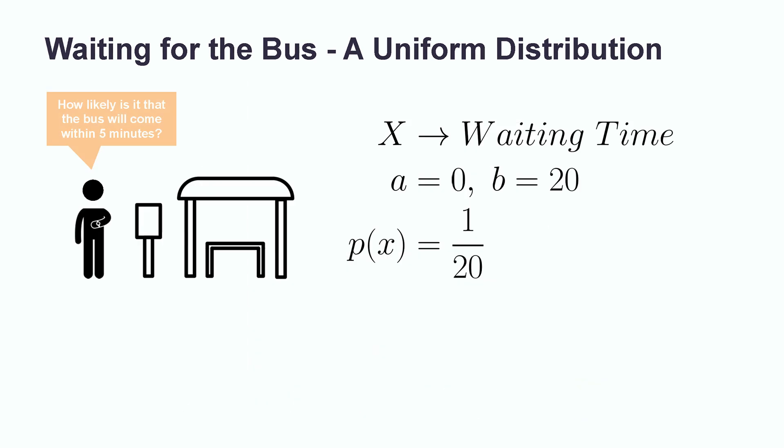Now, we can ask ourselves something like, how likely is it that the bus will come within 5 minutes of our arriving? Pause the video for a moment to think about what probability we have to calculate in terms of our probability interval. Now, a common mistake would be to write down something like probability of X is equal to 5. This is incorrect because this is an exact value, and the probability of observing any single exact value is always 0. In our case, we have to write down the probability that the random variable X lies between 0 and 5.